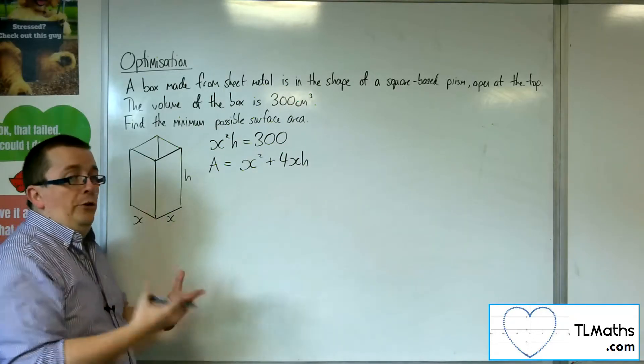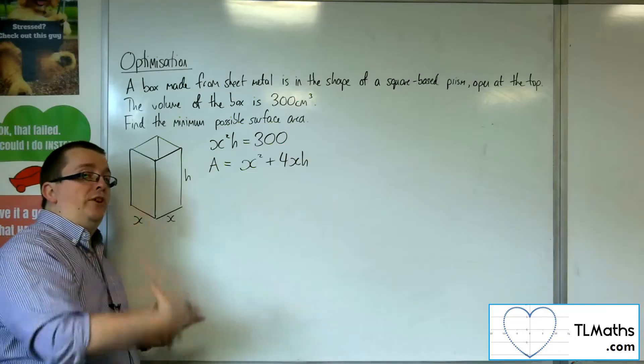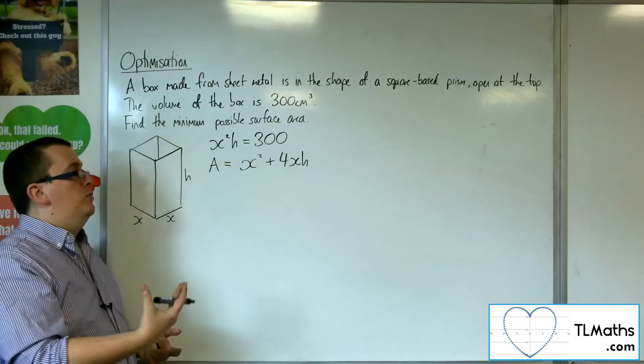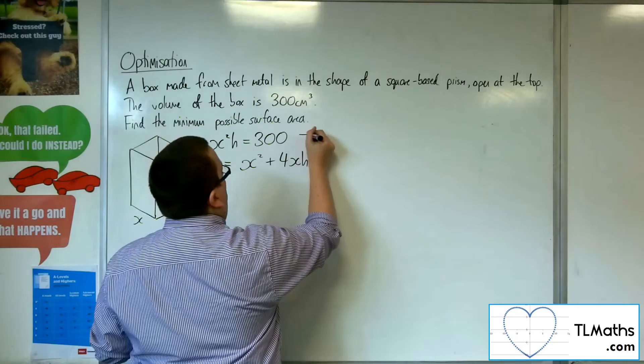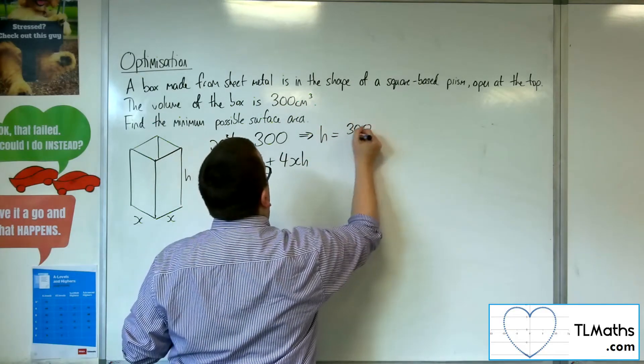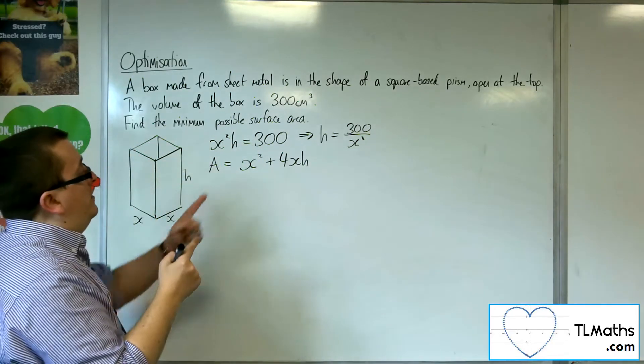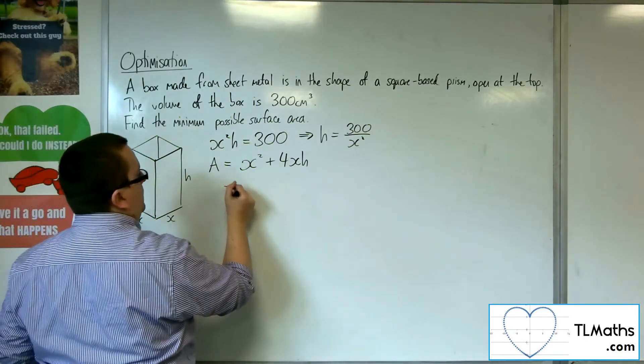Now I use the equation where I can rearrange it to get h, because I want the area just in terms of x, just like in the previous video. So I want to rearrange this one to get h is 300 over x squared. That allows me to substitute that into the area equation.